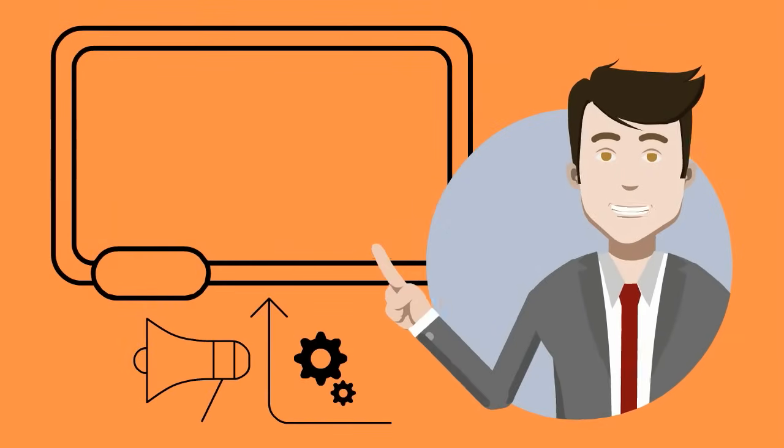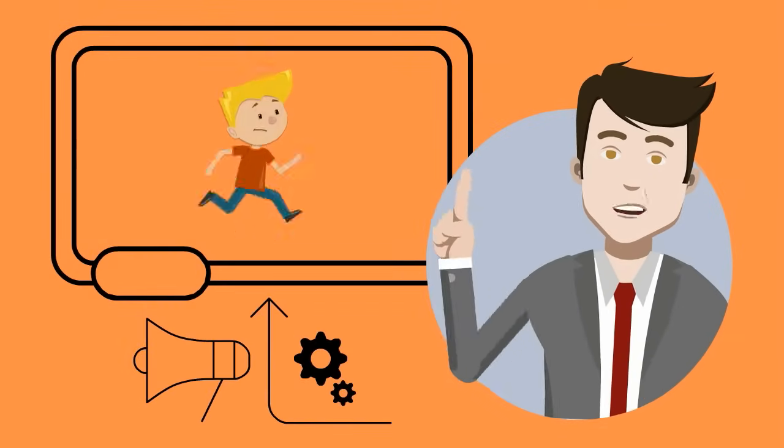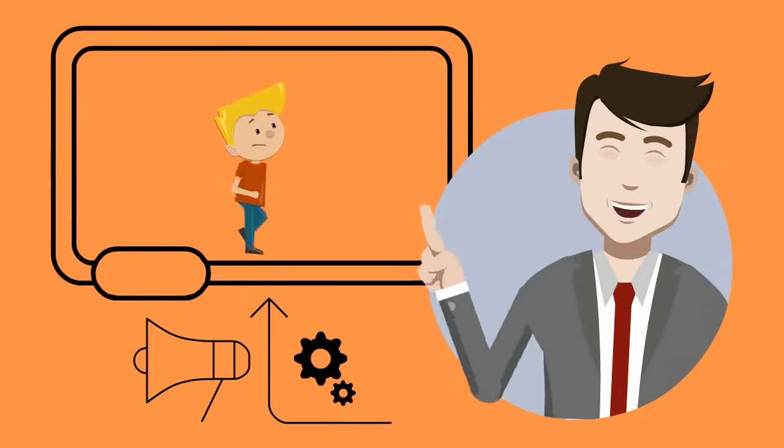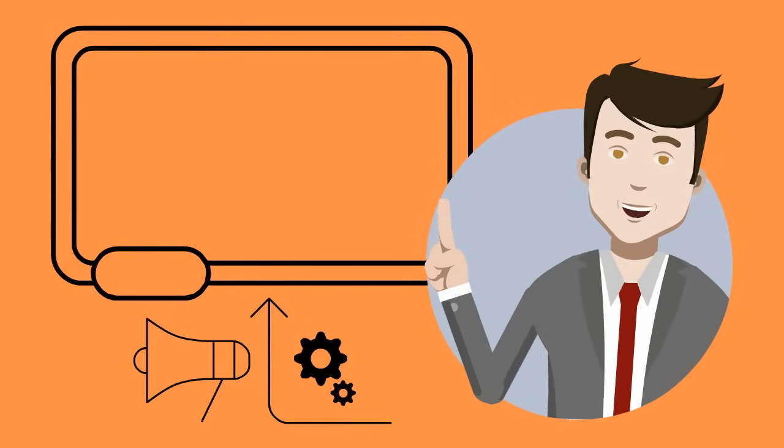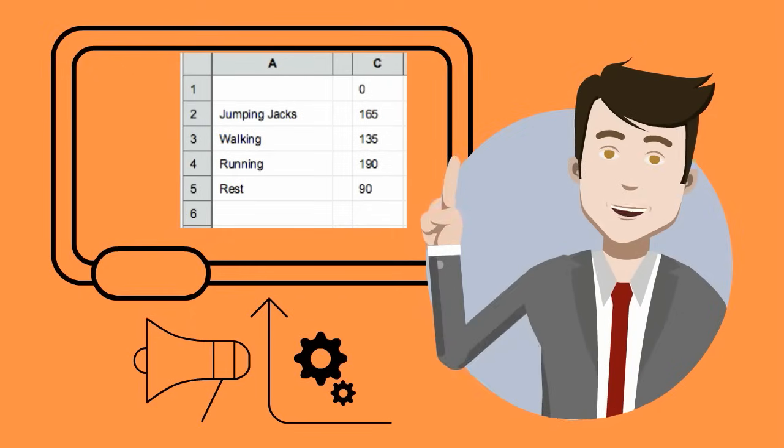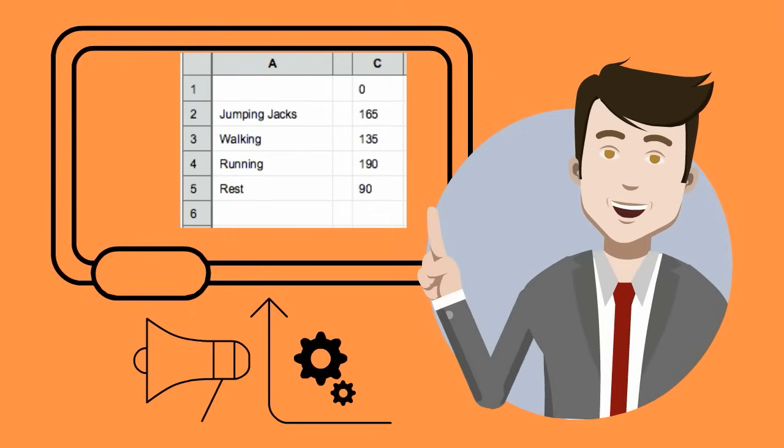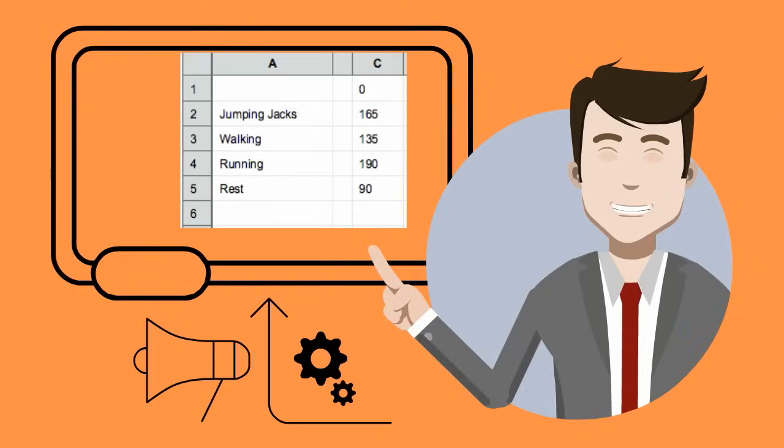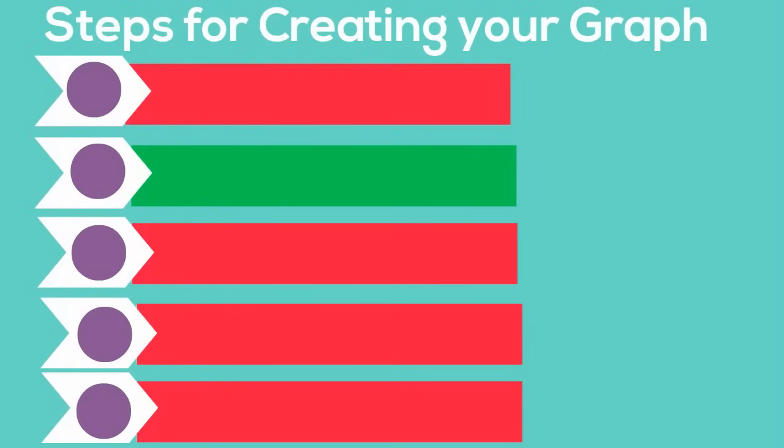Imagine that in science class you did an experiment in which you tested your heart rate in different exercises. You are presented with this information afterwards in a data table and it has the type of exercise and the heart rate of the people who participated in the exercise. You can use the following steps to create a graph in science.